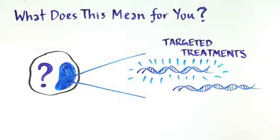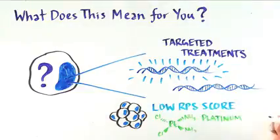In this case, perhaps we should only be treating tumors with a low RPS score with platinum-based chemotherapy for breast and lung cancer.